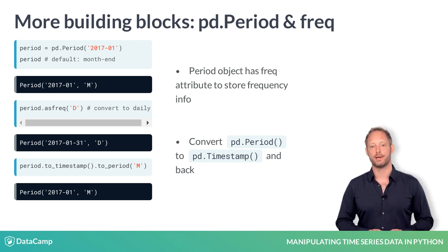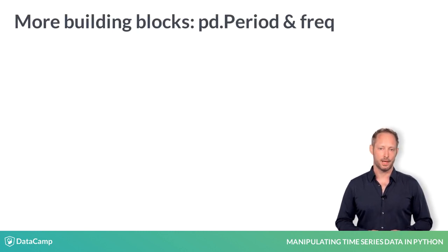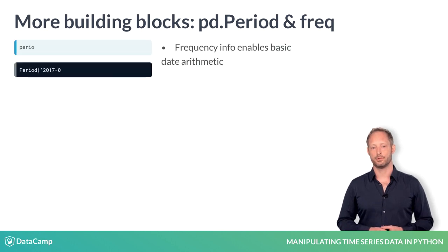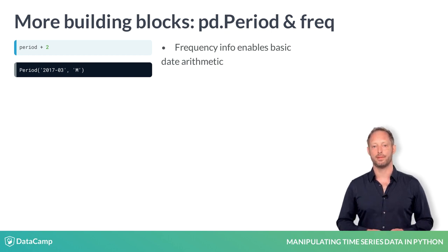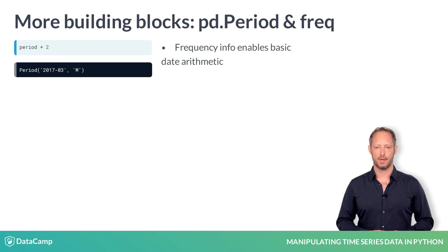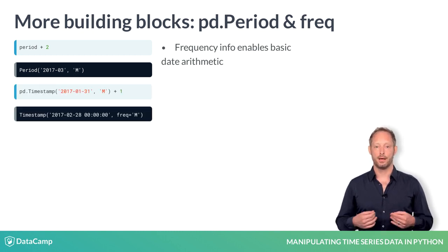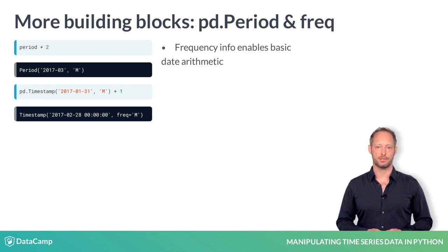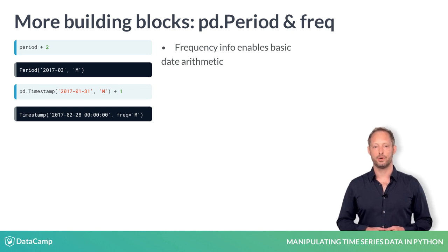You can convert a period to a timestamp object and a timestamp object back to a period object. You can also do basic date arithmetic. Starting with the period object for January 2017 at monthly frequency, just add the number 2 to get a monthly period for March 2017. Timestamps can also have frequency information. If you create the timestamp for January 31st 2017 with monthly frequency and add one, you get a timestamp for February 28th.